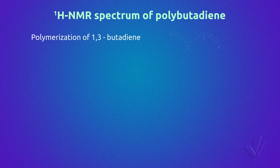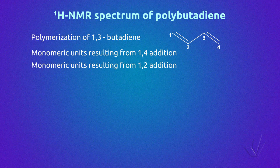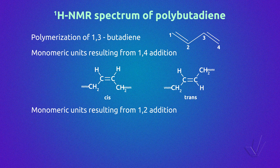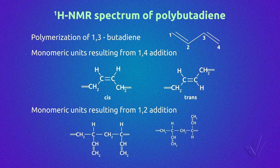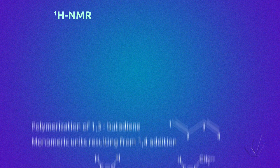Another interesting example is the polymerization of 1,3-butadiene, which gives two types of monomeric units resulting from the 1,4 and 1,2 additions. The 1,4 unit has two geometric isomers, cis and trans. The 1,2 unit, due to the presence of asymmetric carbons, has two stereoisomers: isotactic and syndiotactic. It is possible to easily calculate the amount of 1,4 and 1,2 units by proton NMR, but calculating the amount of isomers of each structure requires carbon-13 NMR.